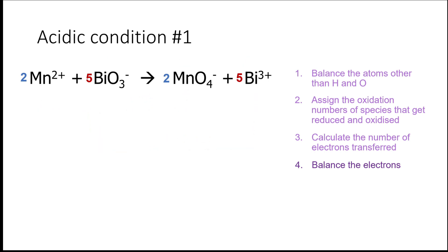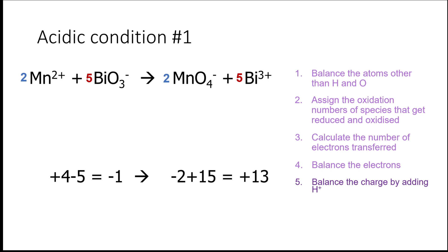The fifth step is to balance the charges on either side of the equation by adding hydrogen ions. On the left-hand side, we have +4 because the manganese ion carries a 2+ charge and there are two of them, so 2 times 2+ is +4. We have −5 from the 5 BiO₃⁻ ions, which equals −1. On the right-hand side, we have −2 and +15, giving a total of +13. This means we need to add 14 hydrogen ions on the left-hand side to equalize the charges on both sides to +13.